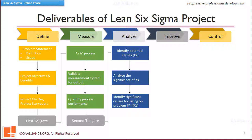In the Analyze Phase, the potential causes behind variation are analyzed based on the data collected in the Measure Phase. Significant relationships between the causes and output are established through data analysis. Sifting of excess is done so that focus can be given to the vital few reasons.